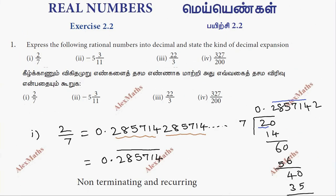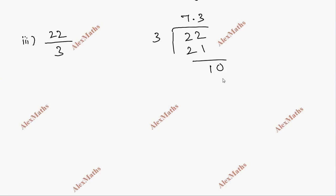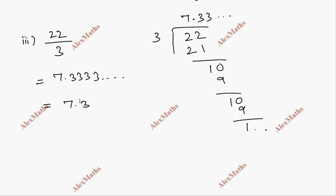Next, sub-division 3: 22 by 3. So we divide 22 by 3. 7 times 21, balance 1. Add 0 — 3 times, remainder 1 again. This process continues. So the value is 7.3333... which is 7.3 bar. This is non-terminating and recurring.